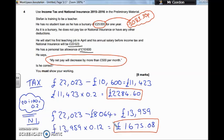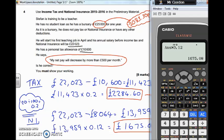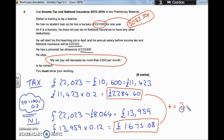So we've got these two deductions to take off our wage. We need to add them together. Adding the National Insurance of £1,675.08 to the income tax of £2,284.60 gives us total deductions of £3,959.68. That's our total deductions — National Insurance and Tax.